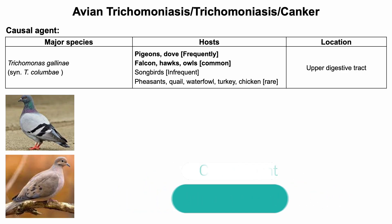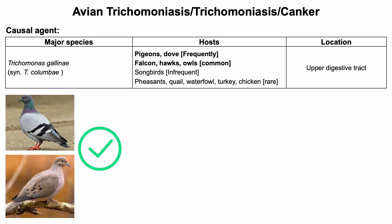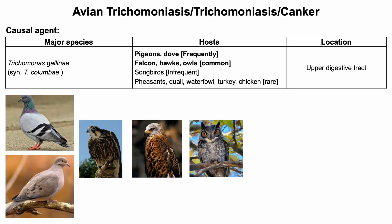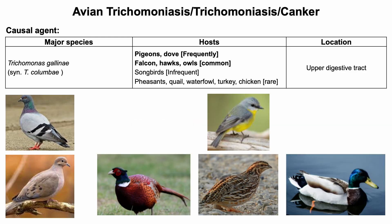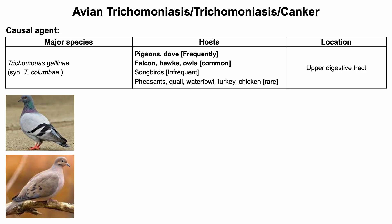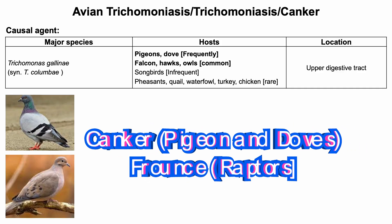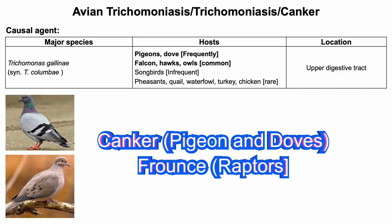Avian trichomoniosis is caused by a single-cell protozoon known as Trichomonas gallinae. Pigeons and doves are most frequently affected by this protozoan parasite. The infection is commonly found in falcons, hawks, and owls. Different other birds such as songbirds, pigeons, quails, waterfowl, chicken, turkey, etc. can also be infected. Trichomonas gallinae is found everywhere in the world where pigeons and doves are found — that is, the distribution of this organism is worldwide. The disease is commonly known as canker in pigeons and doves, and frounce in raptors.